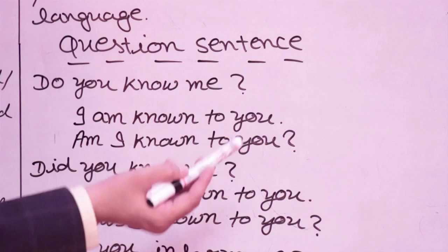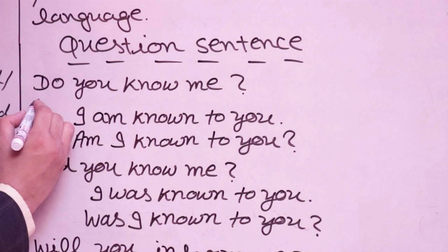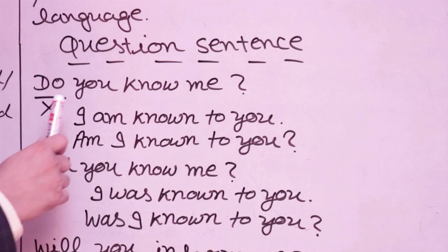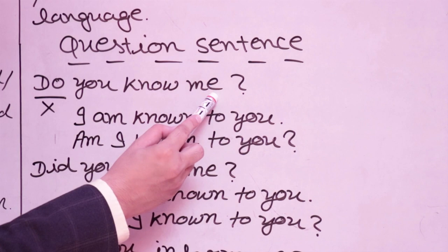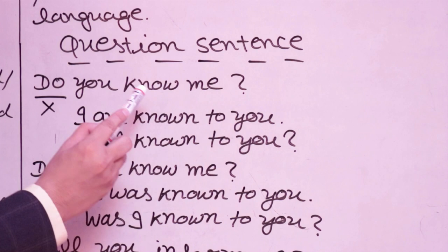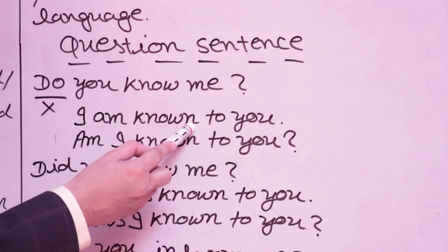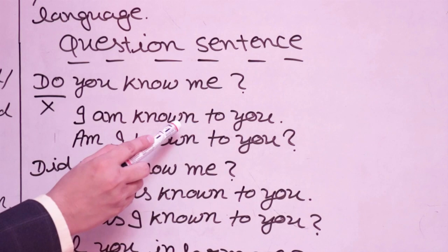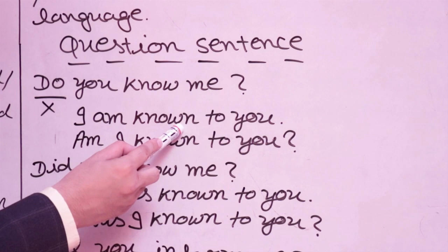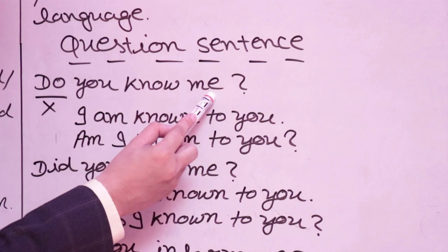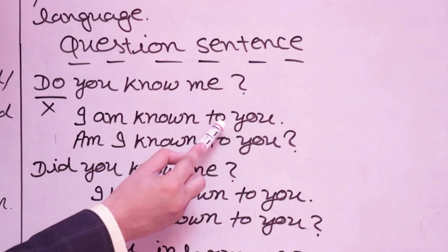Yes/no question — P1 tense: 'Do you know me?' The easiest way: treat it as 'You know me.' Me is the object; me changes into I. Present tense, so use 'am.' Third form of know is 'known.' Statement: 'I am known to you.' Now bring 'am' to the front: 'Am I known to you?' — meaning 'Do you know me?' Note: use 'to' not 'by' here — appropriate preposition.